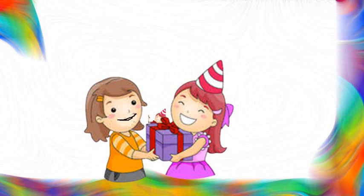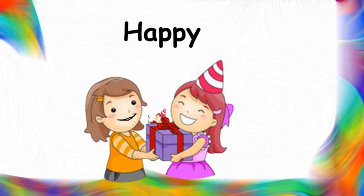What can you see here? A girl is giving a gift to a birthday girl. Look at the expression of the birthday girl. What do you think? How is she feeling? She is feeling extremely happy. So what is the name of the feeling here? Happy. You can see it is written above. Happy. Please repeat after me — happy. Let us move on to the next slide.